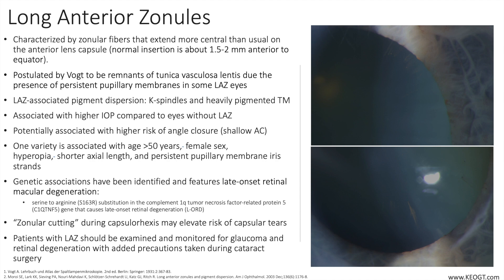Zonular cutting can occur during creation of a capsular axis at the time of cataract surgery. This occurs when the leading edge of the capsular axis runs into an anteriorly placed zonule, which can lead to creation of a smaller capsular axis than usual, with all of the potential complications that can result downstream from that.